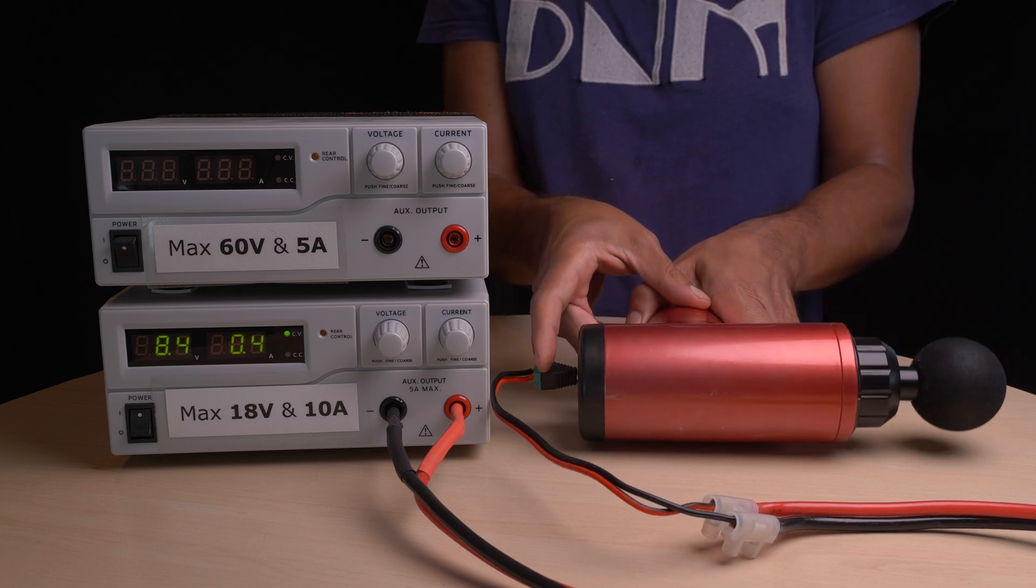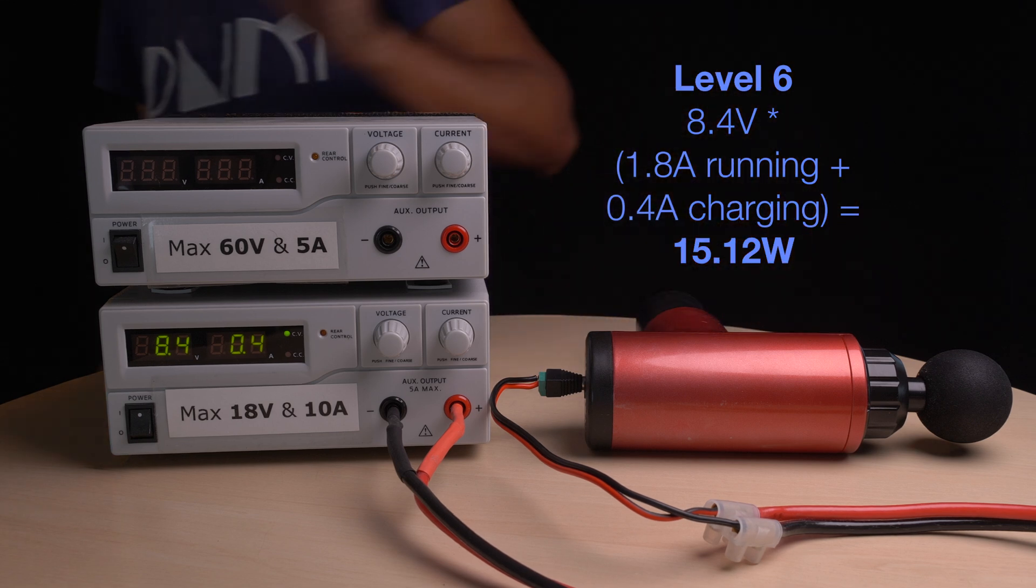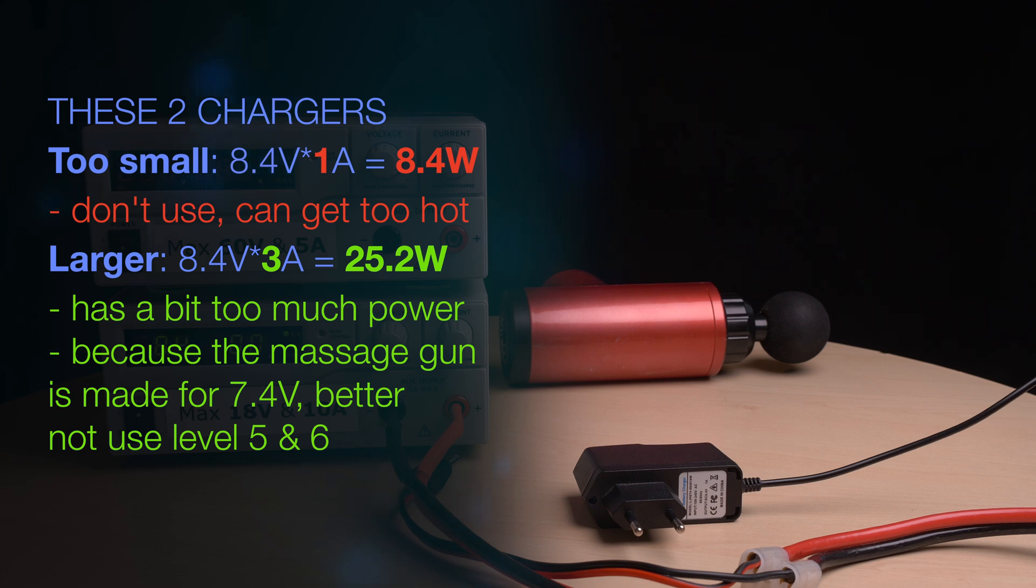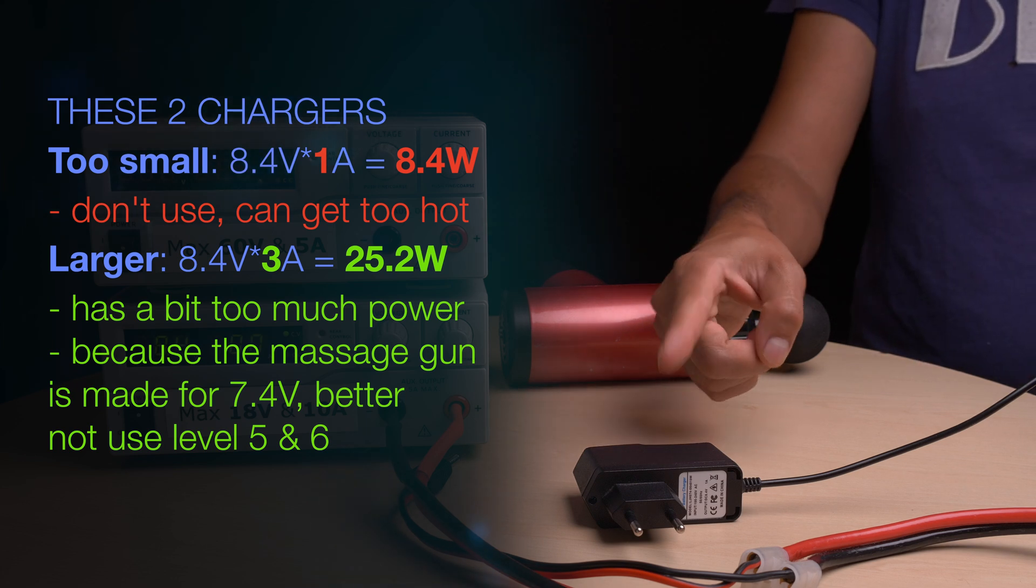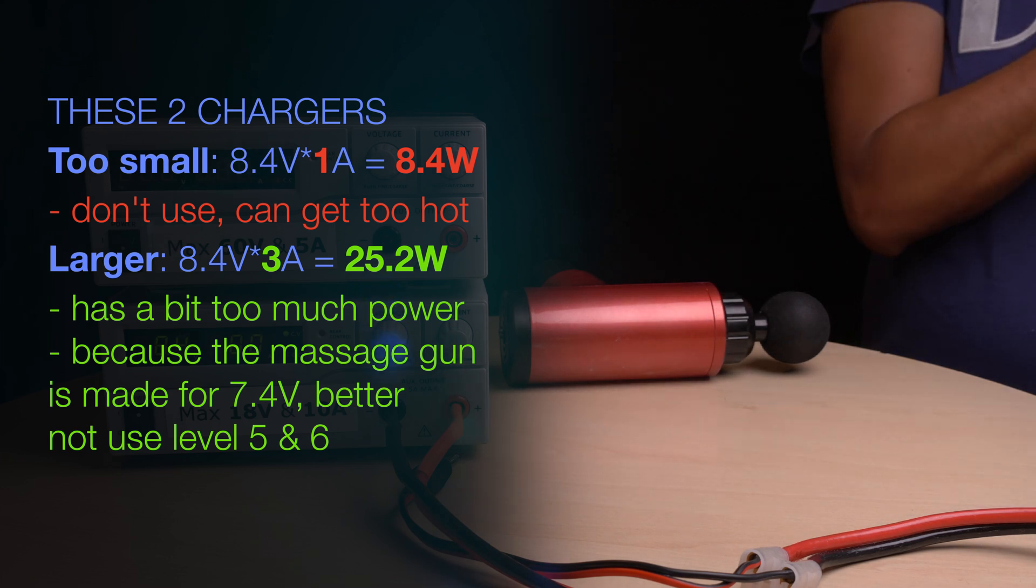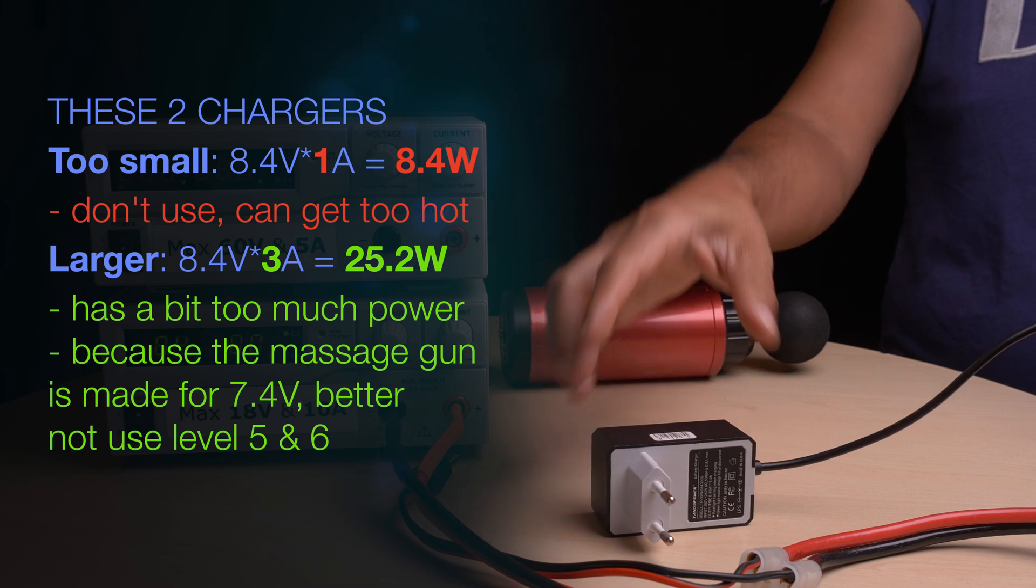The maximum power use on level 6 while running and charging is 15.12 watts. Note that, when you really use it, you put a load on it, and then the power usage will be more. Of the two chargers I have, one is clearly too small. The other one is okay, but because the voltage is a bit higher now, I will not use level 5 and 6.